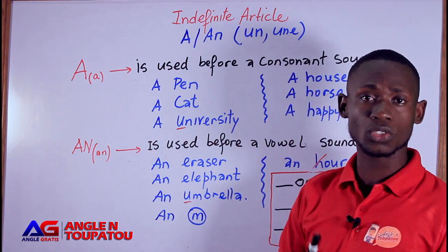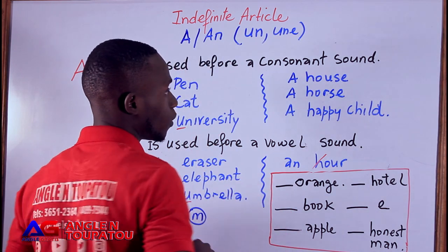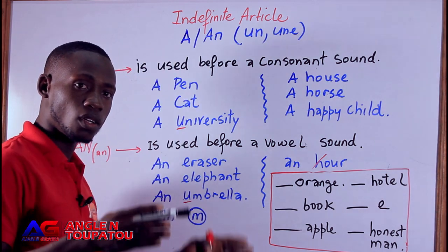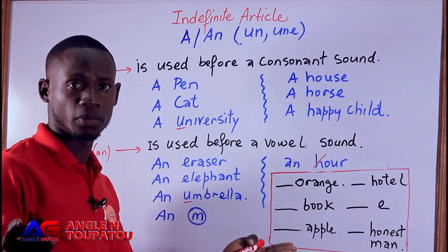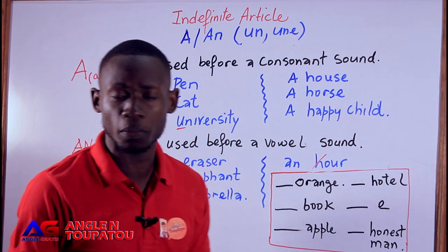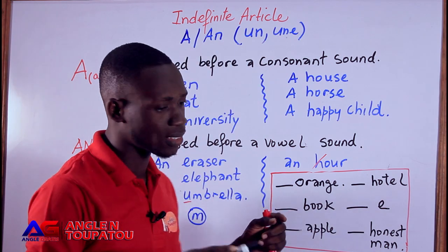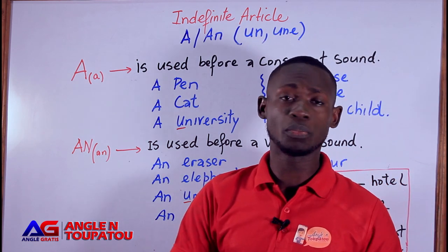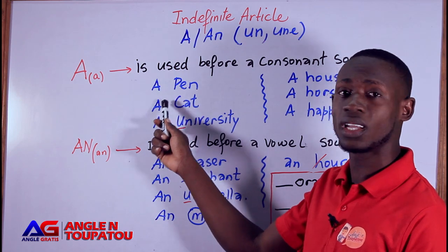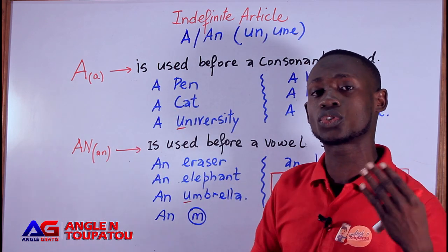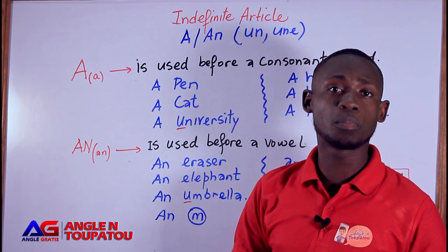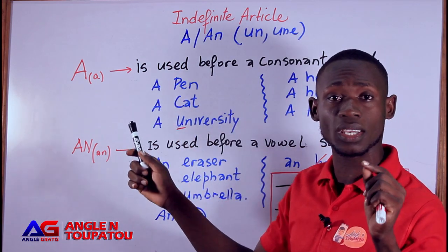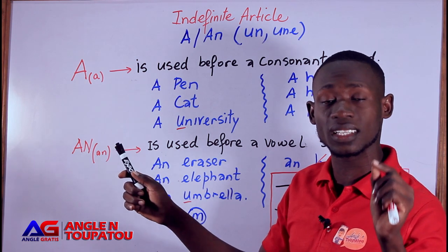A consonant sound — c'est un son consonant. For example, we have the word 'pen' — plume in French, 'pen' in English. In French you say 'une plume', but in English, to know whether to use 'A' or 'AN', it depends on the word — whether it begins with a consonant sound or a vowel sound. For example, we have the letter P — P is a consonant, and this is a consonant sound. I say 'open'.